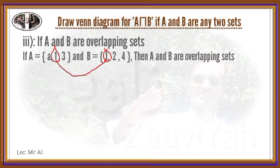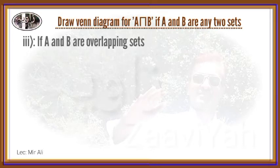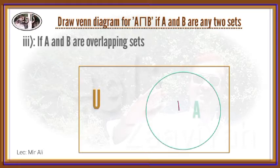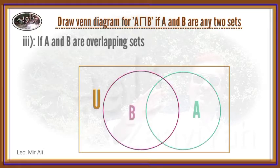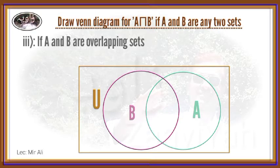A is not a subset of B, and B is not a subset of A. So sets A and B are overlapping. For A-Intersection-B, the Venn Diagram is drawn. There is one universal set U, and set A and set B are drawn as circles. Since they are overlapping sets, common elements exist.